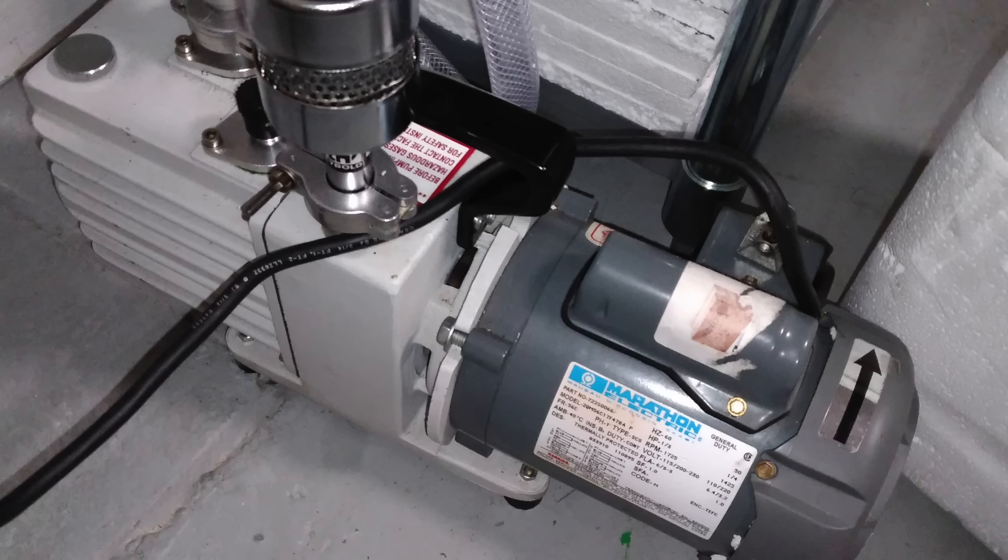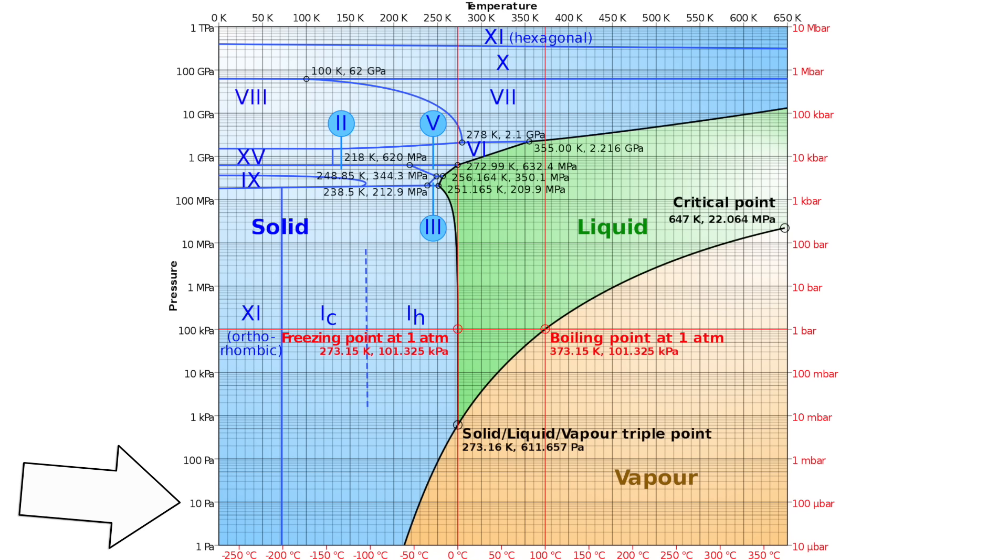So when choosing a vacuum pump, be sure to get a pump that can go down to at least 100 millitorr. You probably won't get that far because of gas in the chamber from all the sublimating water, but it'll get you far enough for the effect to happen properly.